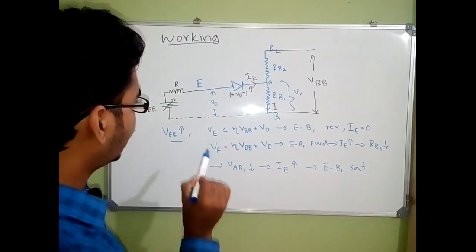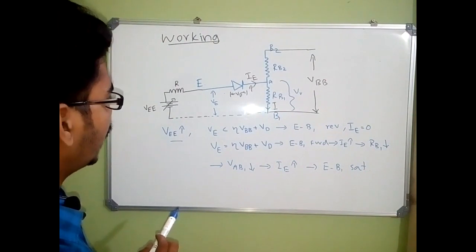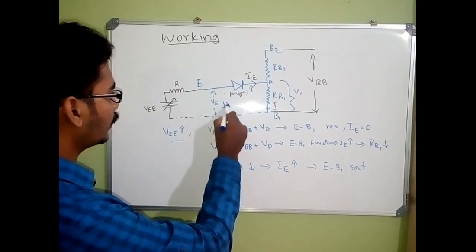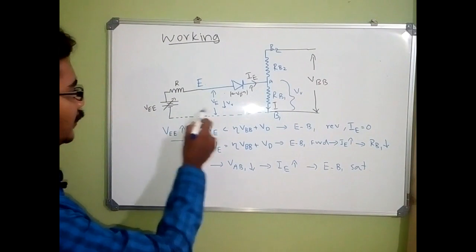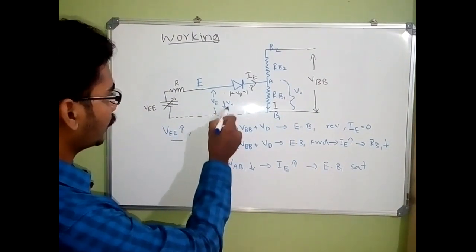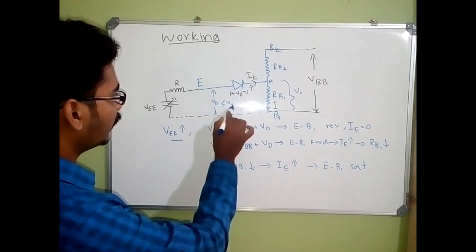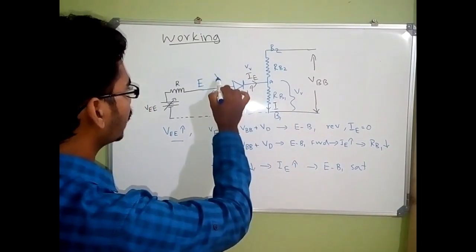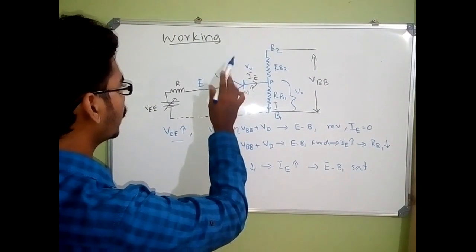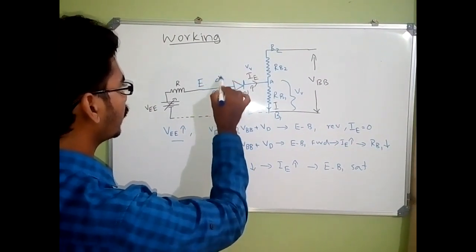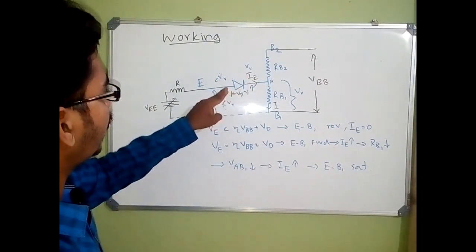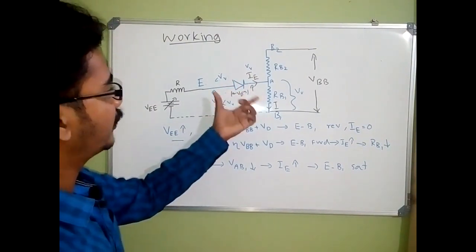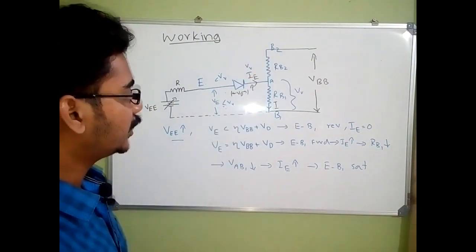To turn off the UJT again, we decrease VE below VV by decreasing VEE. At some point, VE becomes less than VV, so the higher potential is on the base side and lower on the emitter side. Since this is a p-n junction, it becomes reverse biased. When the emitter-base junction is reverse biased, IE becomes zero and the UJT is turned off. This is how the UJT works.